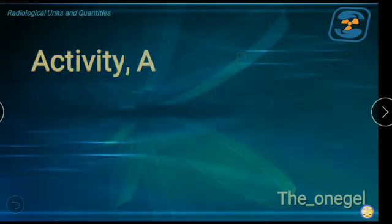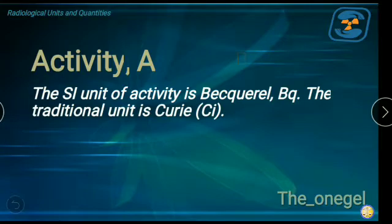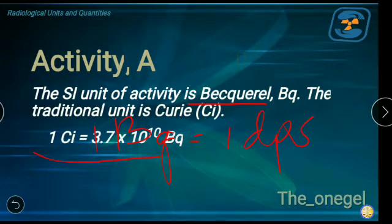So, the conversion factor. The SI unit of activity is Becquerel. Take note again, one Bq, one Becquerel is one disintegration per second. The traditional is Curie. Therefore, for every one Curie, there are 3.7 times 10 raised to 10 Becquerel.